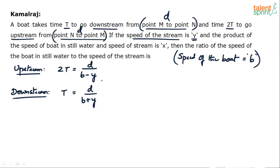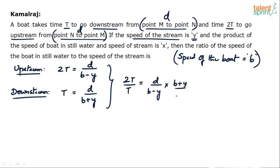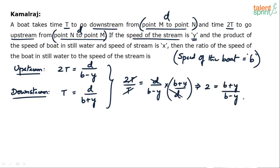Now divide the upstream equation by the downstream equation. We get 2t / t = [d / (b − y)] divided by [d / (b + y)]. Taking the reciprocal, d and d cancel, and t and t cancel, giving us 2 = (b + y) / (b − y).